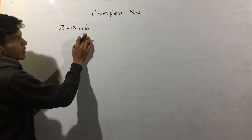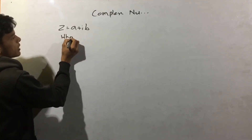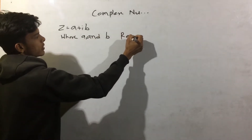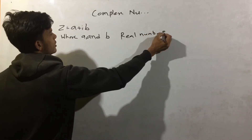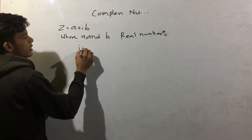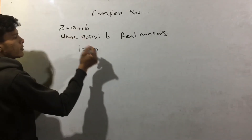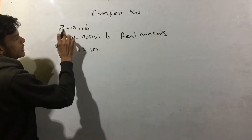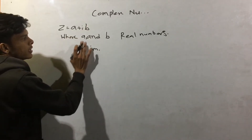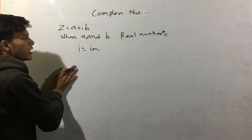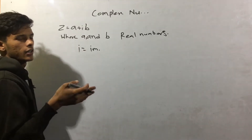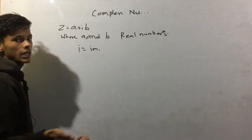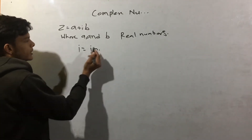A complex number z is equal to a plus ib, where a and b are real numbers and i is the imaginary number. So z equals a plus ib is called a complex number.